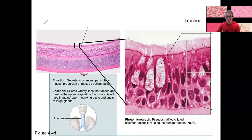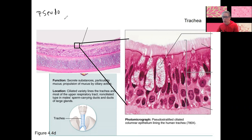Next is pseudostratified columnar. I skipped stratified cuboidal — we'll cover stratified cuboidal and stratified columnar in a separate lecture because they relate to glands.